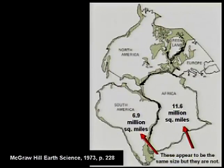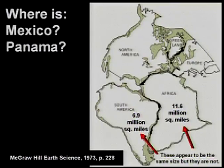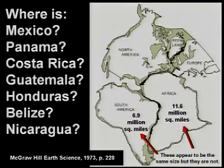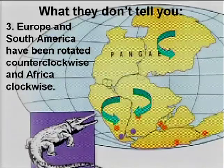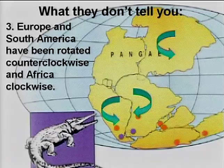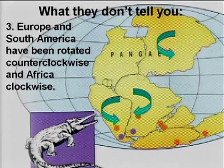They'll also say there are magnetic reversals in the mid-Atlantic ridge. But they don't tell you they shrank Africa nearly 35 or 40 percent to make them fit, or that Mexico and Central America are gone from the model. They don't tell you that Europe and South America were rotated counter-clockwise and Africa was rotated clockwise to make them fit. And if you took the water out of the oceans, you'd notice there is dirt underneath — the oceans have a bottom.